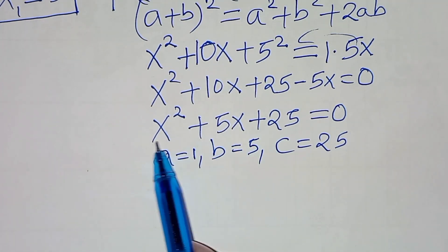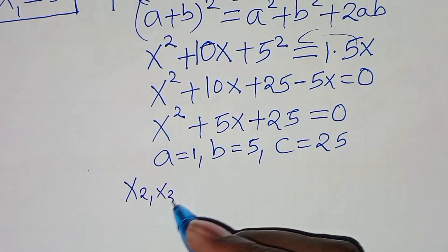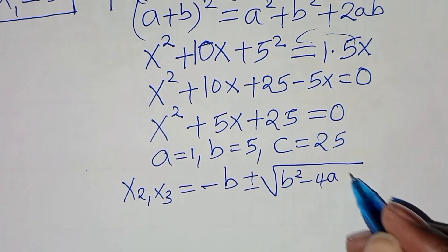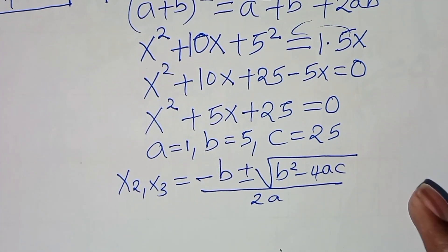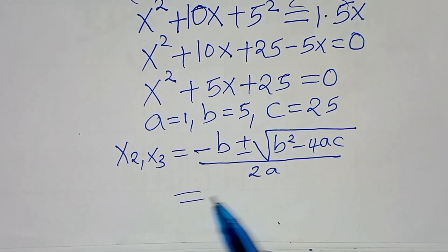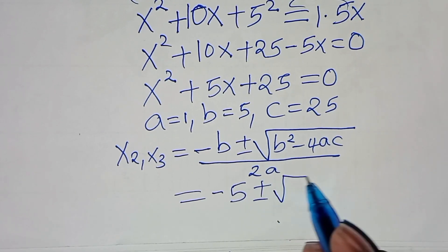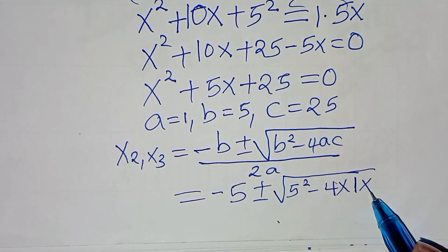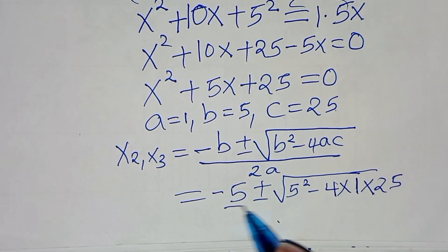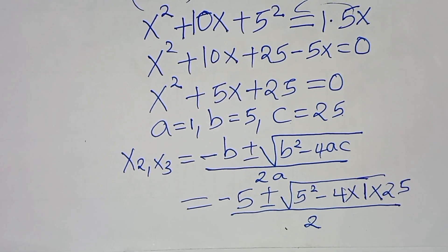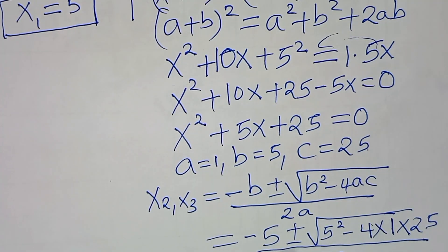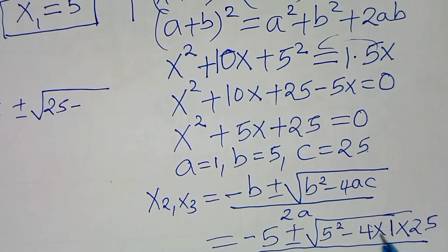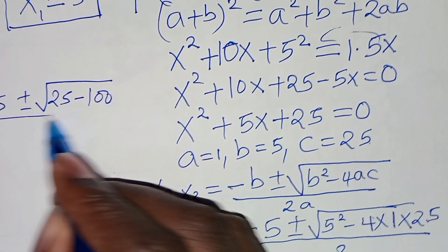To solve for x₂ and x₃, we apply the quadratic formula: x equals negative b plus or minus the square root of b² minus 4ac, all divided by 2a. Substituting: negative 5 plus or minus the square root of 5² minus 4 times 1 times 25, all divided by 2. That gives negative 5 plus or minus the square root of 25 minus 100, all divided by 2.